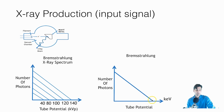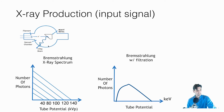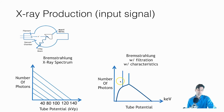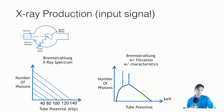In reality, what happens is we start with that Bremsstrahlung spectrum and then apply filtration — the x-rays pass through the glass window and usually additional filtration before reaching the patient. Those lower-energy x-rays are preferentially attenuated. So you get a filtered Bremsstrahlung curve, and when you add the characteristic peaks, you get the classic x-ray spectrum shape. When someone shows you a plot of energy versus number of photons and talks about the x-ray spectrum, it's not really that complicated — there are just two fundamental things happening: Bremsstrahlung and characteristic radiation.